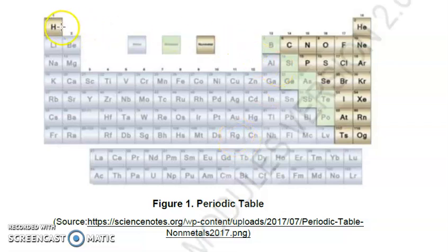The lanthanide group belongs to period six - one, two, three, four, five, six. Then the actinide group belongs to period seven. Then we have the so-called representative elements. They are group one, group two, then we have group thirteen, fourteen, fifteen, sixteen, seventeen, eighteen. The rest of the elements are transition elements - they belong to group three, four, five, six, seven, eight, nine, ten, eleven, twelve.